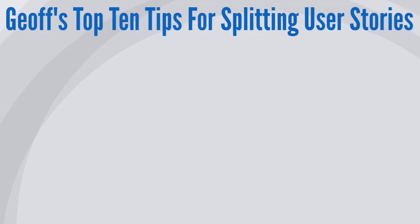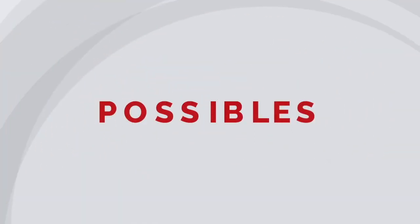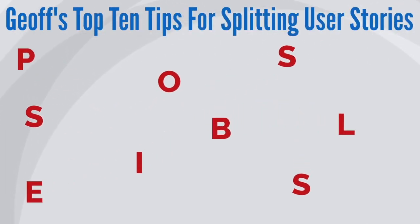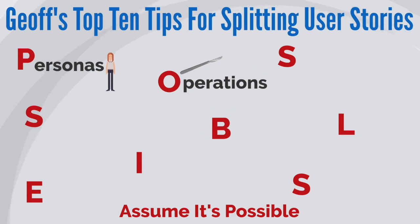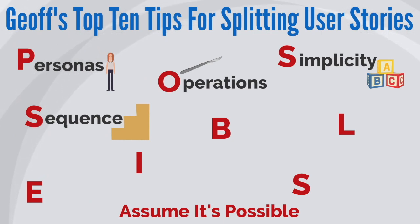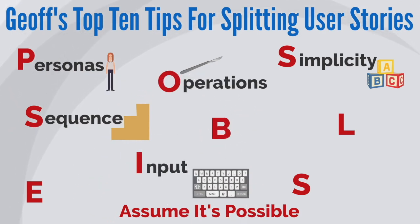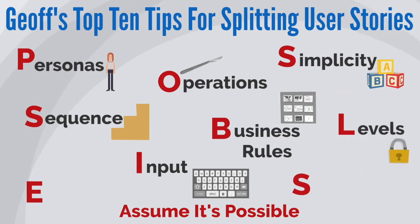As a quick summary: once you've avoided the traps of extending the sprint and splitting stories by horizontal functional silos rather than small vertical slices of value and functionality, you can start by believing things are possible. Then consider splitting by Personas, Operations, Simplicity, and Sequence to challenge assumptions and remove dependencies. Finally, think about Input, Business Rules, Levels, and Effort — and consider spiking things out to reduce uncertainty and deliver value incrementally.